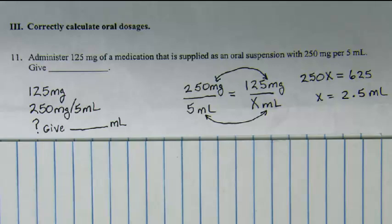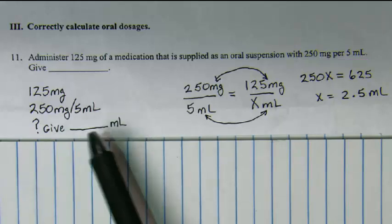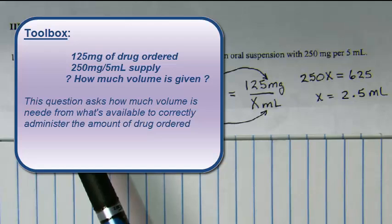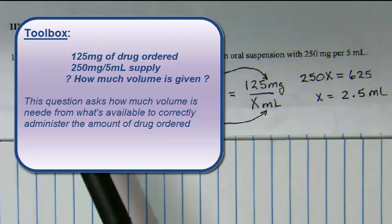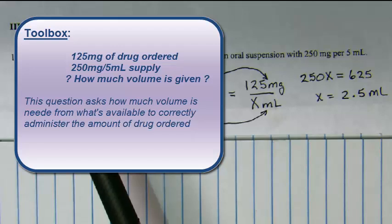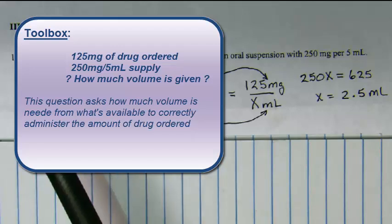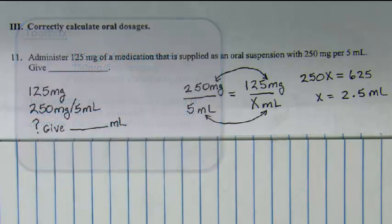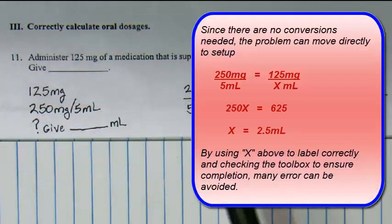The first question: administer 125 milligrams of medication that is supplied as an oral suspension with 250 milligrams per 5 milliliters. The toolbox has the amount ordered — 125 milligrams — the supply of 250 milligrams of drug per 5 milliliters of volume, and the question relates to how much volume to give to fill this order.